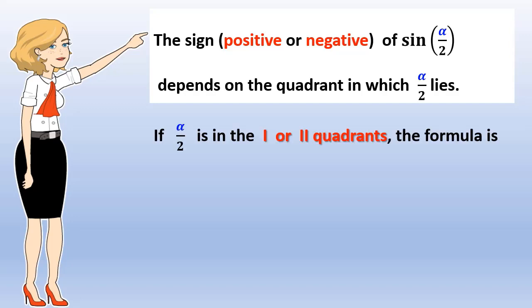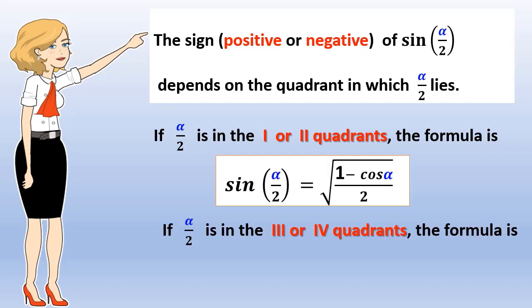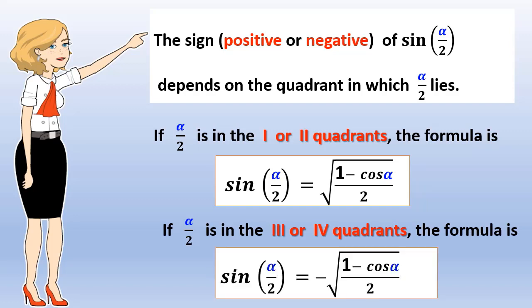If alpha over 2 is in the first or second quadrant, the formula uses the positive case. If alpha over 2 is in the third or fourth quadrant, the formula uses the negative case.